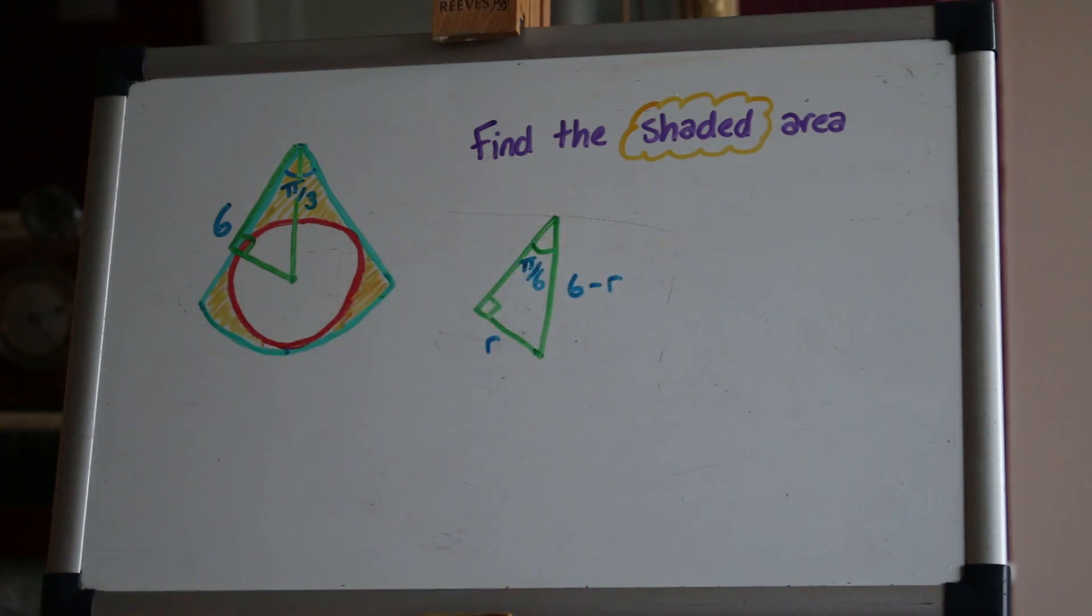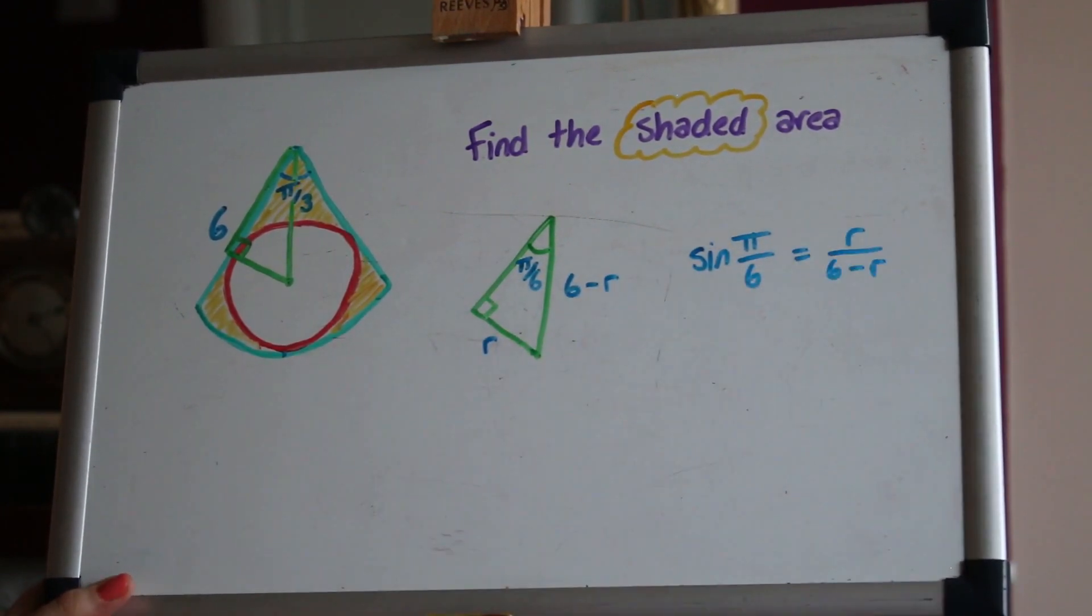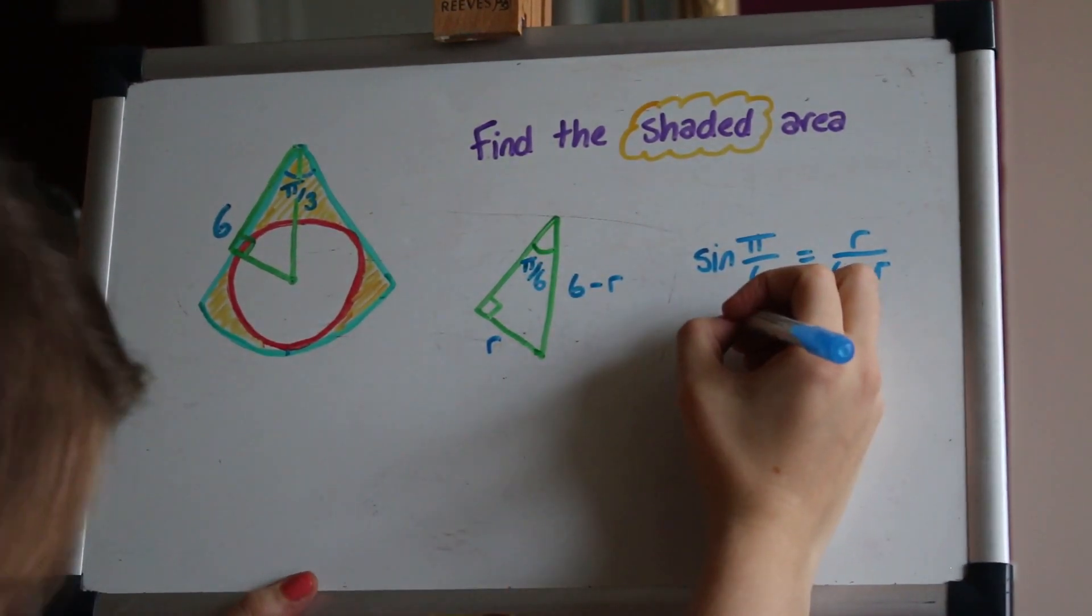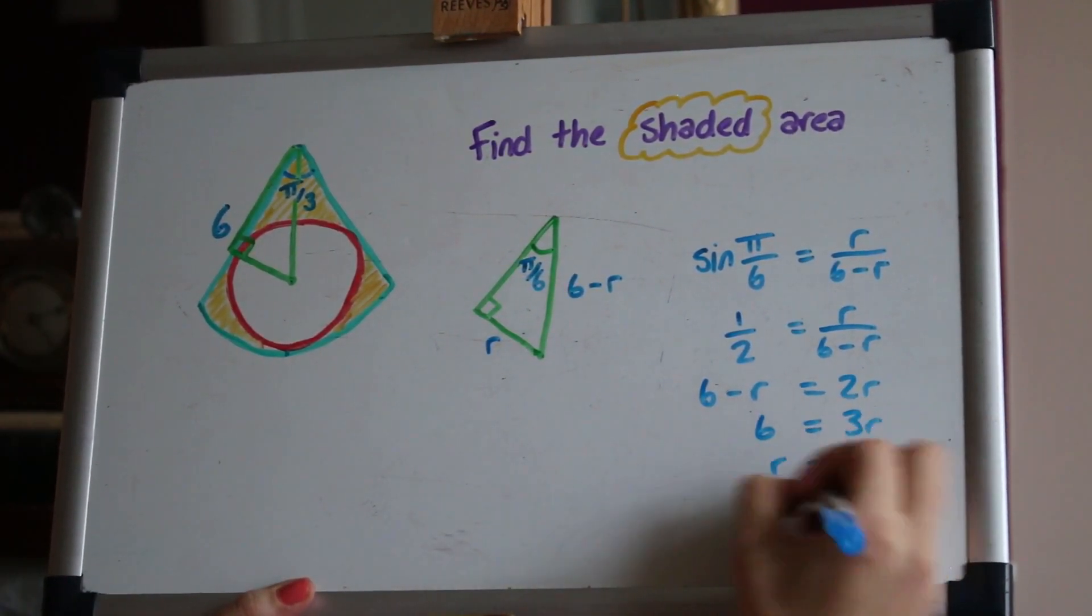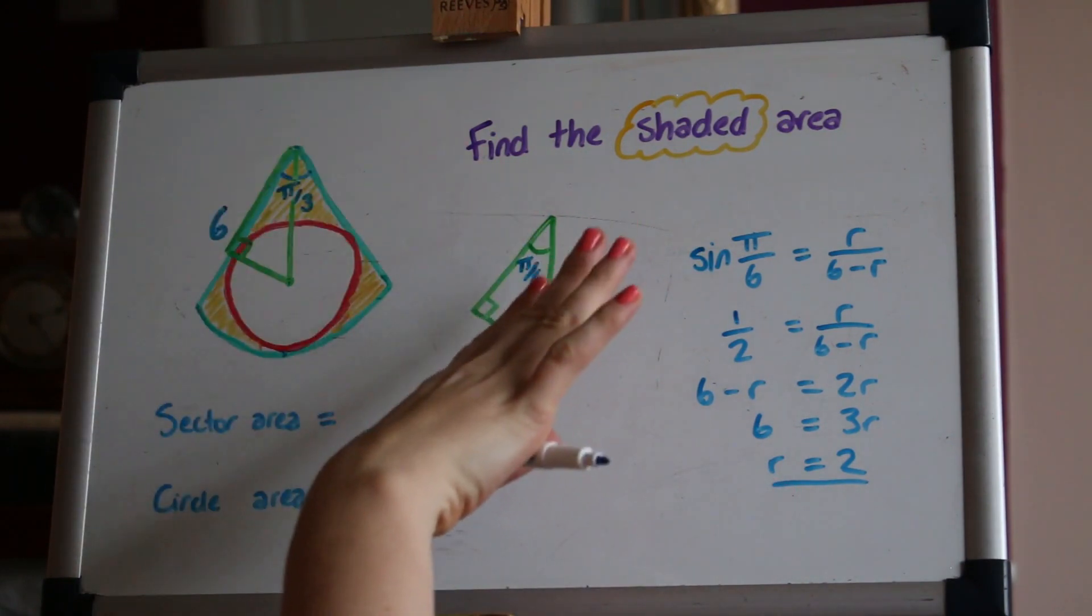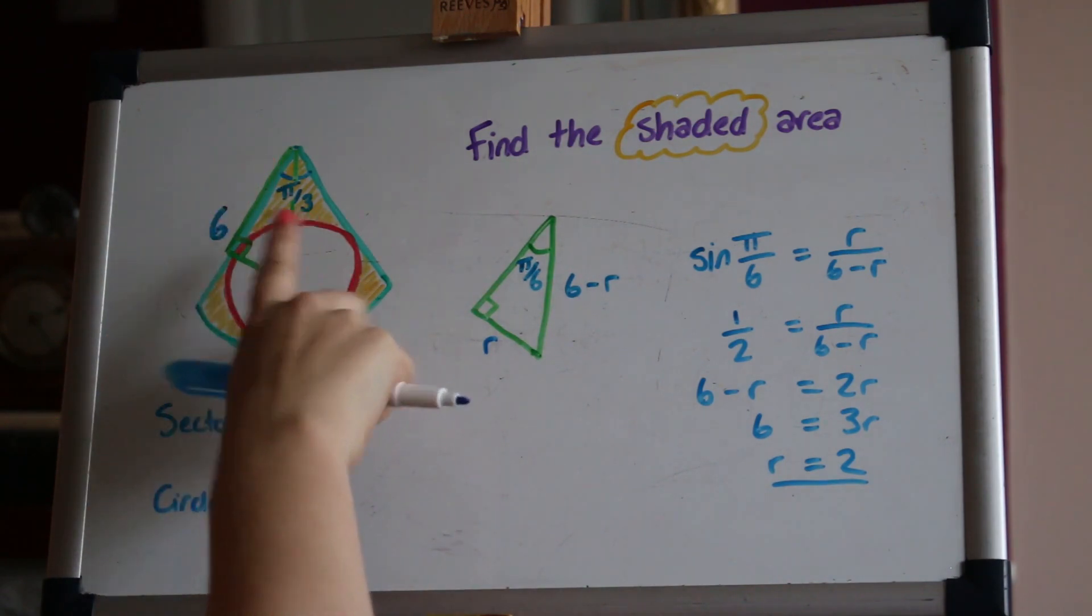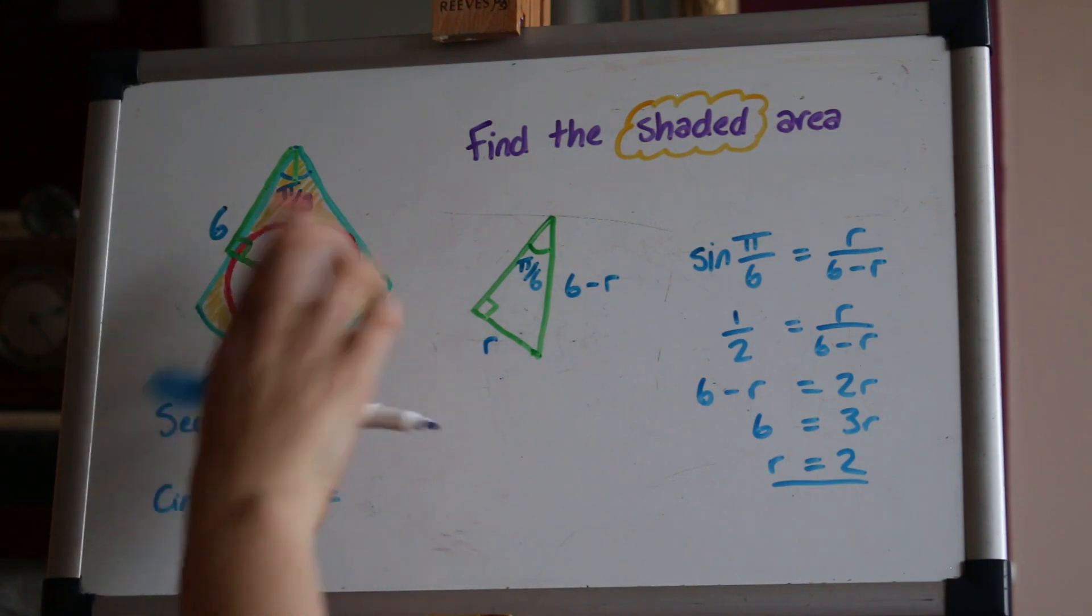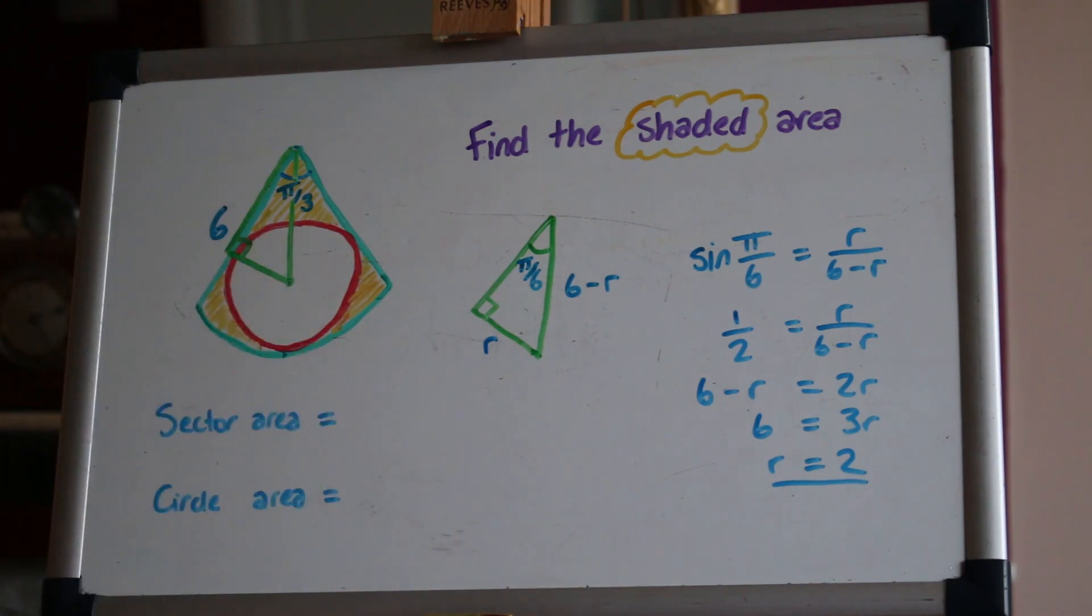Have a go at doing that yourself and now solve. Now that we've found the radius of the circle we can go about finding areas and so we can get the area of the entire sector and the area of the red circle and take them away from each other to leave us with the yellow area that we want. Have a go doing that.